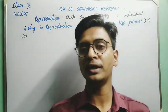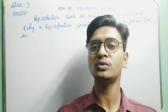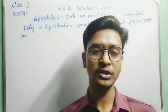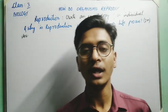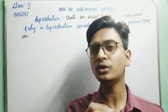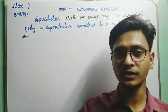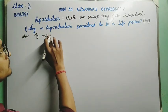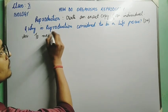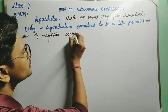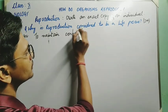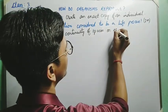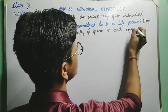The answer is: if we don't do reproduction, we will not be able to maintain the continuity of species on Earth. If any organism does not reproduce, that organism will not be able to maintain the continuity of its own species on Earth. So for maintaining continuity of species on Earth, reproduction is essential.